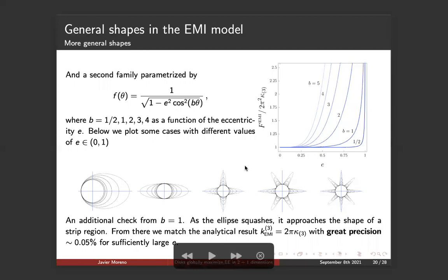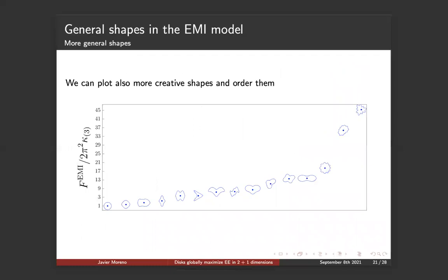And an additional case checked from B equals one, the one of the ellipse, is that as the ellipse is squashed, it should approach the shape of a strip region. So we can try to match the analytic result that we know, which is two pi kappa three, with great precision. We only find a discrepancy of 0.05 percent for sufficiently large eccentricity. And here are more creative shapes. We were just trying different shapes with, I didn't write the equation for each of them, but in any case, we always checked that the same conclusions applied, that the F of EMI over the disk is always greater than the one of the disk, which is here at the beginning.